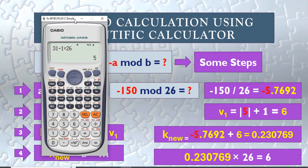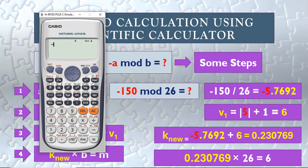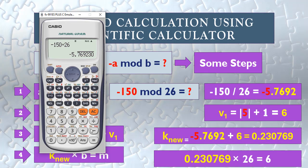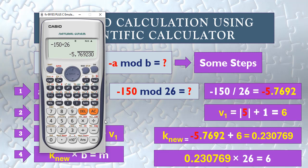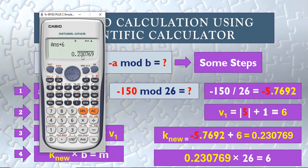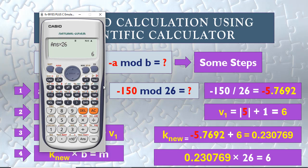Let's check this on our calculator: negative 150 over 26 gives us negative 5-point-something. We add 1 to get 6, then add 6 to the result, giving us a new value. That times 26 equals 6. So negative 150 mod 26 equals 6.